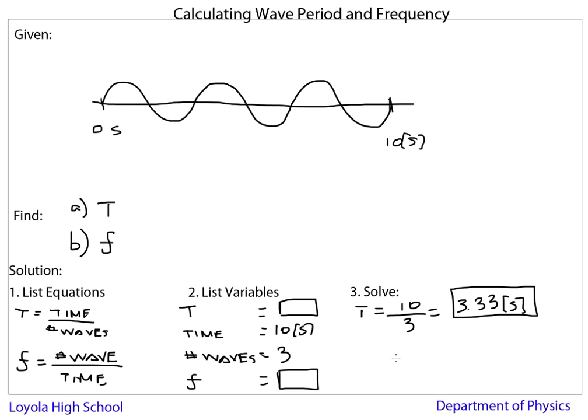And the frequency is the number of waves per time. So I have three waves, and it's 10 seconds. So if you take 3 divided by 10, you get 0.33 hertz. So that's the frequency, so I'll box that answer.